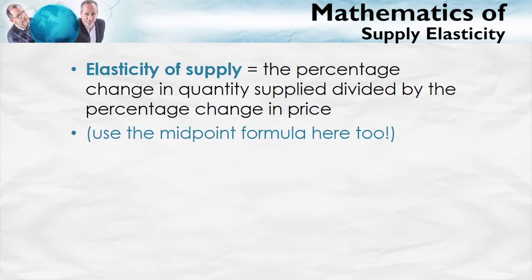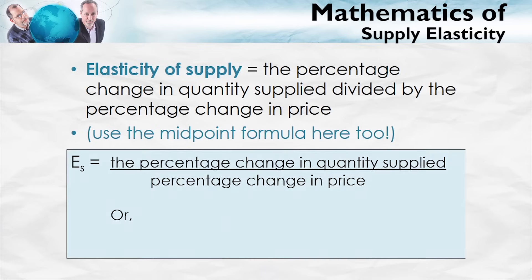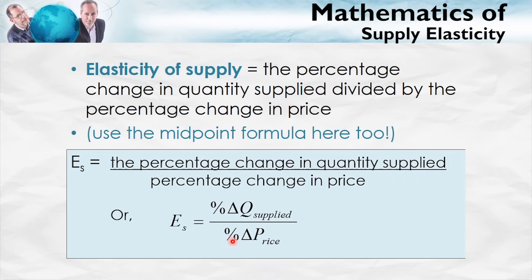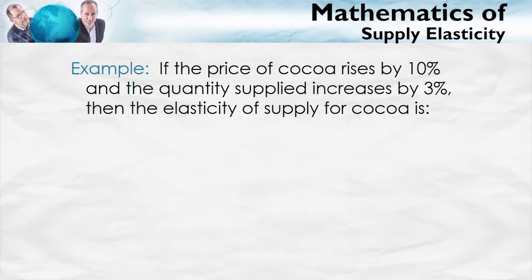The elasticity of supply is defined as the percentage change in the quantity supplied divided by the percentage change in the price — exactly the same formula as for the elasticity of demand, but using quantity supplied instead of quantity demanded. For example, if the price of cocoa rises by 10% and the quantity supplied increases by 3%, then the elasticity of supply for cocoa is 3% divided by 10%, which equals 0.3.